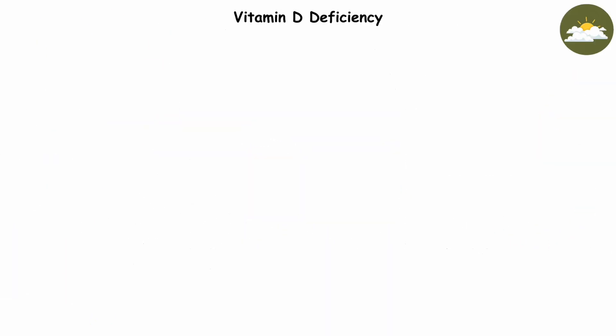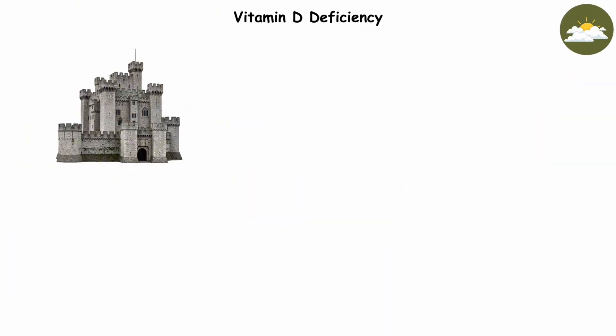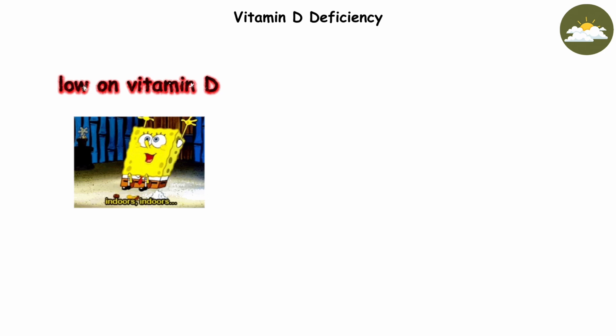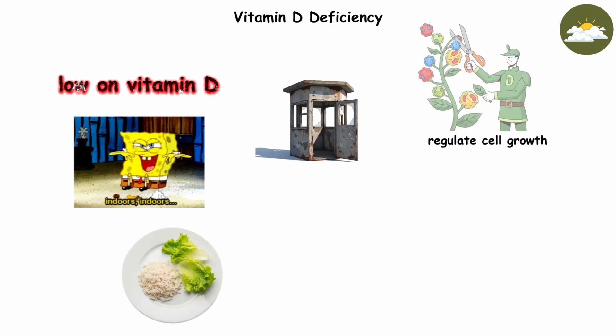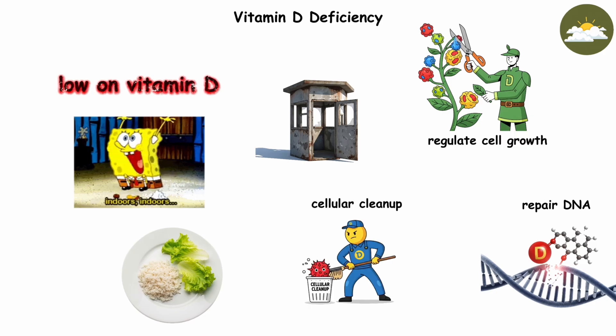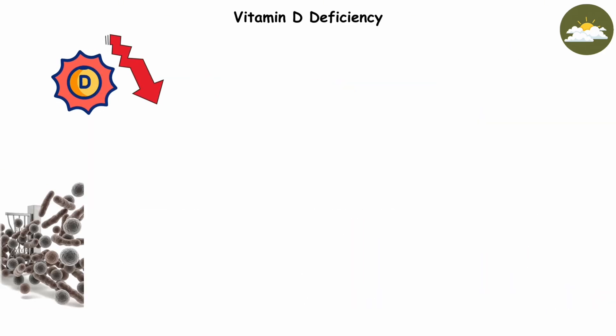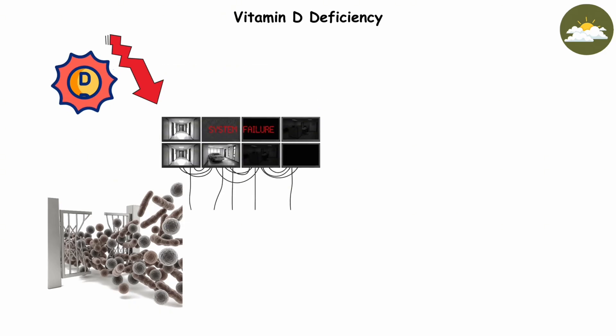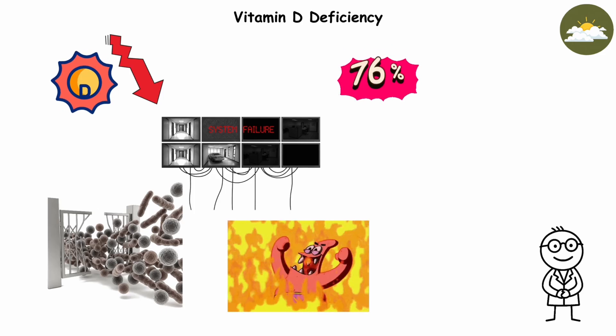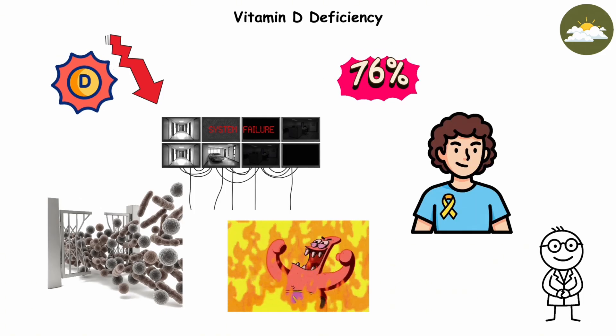Vitamin D deficiency. If your body is a castle, vitamin D is the watchtower guard, scanning for trouble and keeping your defenses sharp. But when you're low on vitamin D, thanks to long indoor days or a diet lacking in rich sources, that guard goes missing. Vitamin D helps regulate cell growth, repair DNA, and even trigger cellular cleanup when cells go rogue. Without enough of it, damaged cells can slip through and your immune surveillance weakens, giving cancer cells a chance to sneak through your security checkpoints. It's not rare either. A staggering 76% of young cancer survivors have vitamin D deficiency.